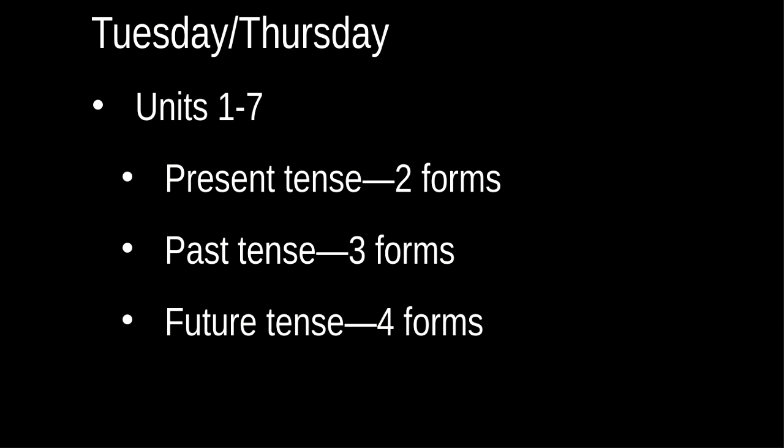Our class will meet Tuesday and Thursday and we will be doing two sets of units. We'll be doing units one through seven, which is a review of verbs. It will cover two forms of the present tense — like 'I eat' and 'I am eating' — three forms of the past tense: 'I ate,' 'I was eating,' and 'I used to eat,' which can be a bit confusing. These are really important because you get a review of how they are used, in what situations they're used, and what the forms are before you move into more complex English verb forms.